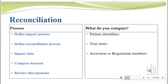Once you have your import process and reconciliation process documented, you actually import the data. Then you compare the two data sets — whatever you've imported against your clinical database — and look for differences or discrepancies between the two. You then resolve those discrepancies either by fixing your database or fixing the central lab's data. Typically you're looking at patient identifiers to make sure patients exist in both places, and at visit dates because the central labs were supposed to be done at particular points throughout the study.